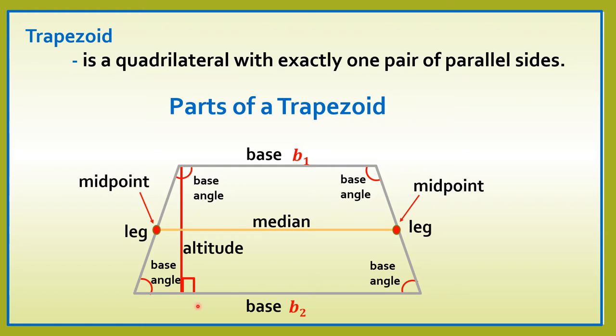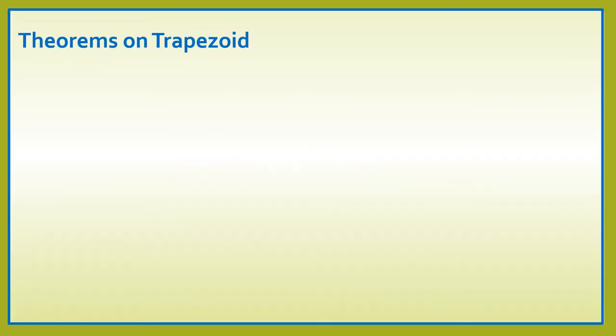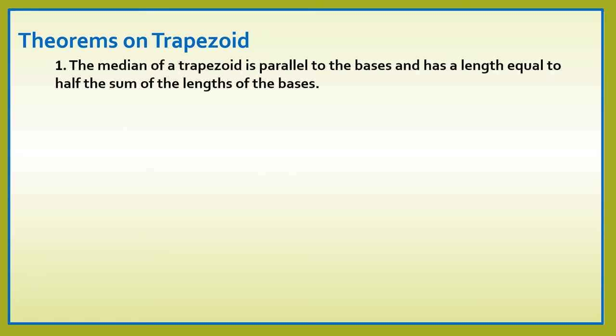So, these are the parts of a trapezoid. Let's go now to the theorems on trapezoid. The median of a trapezoid is parallel to the bases and has a length equal to half the sum of the lengths of the bases.